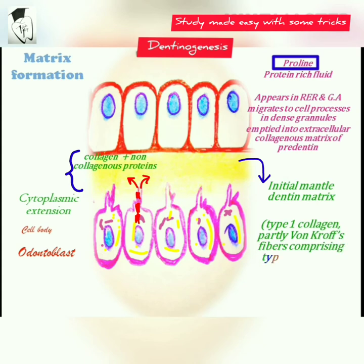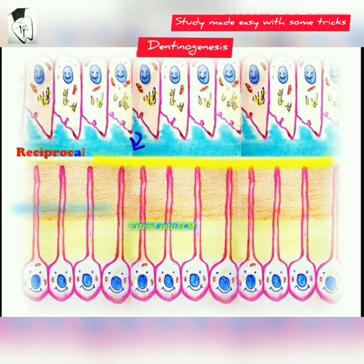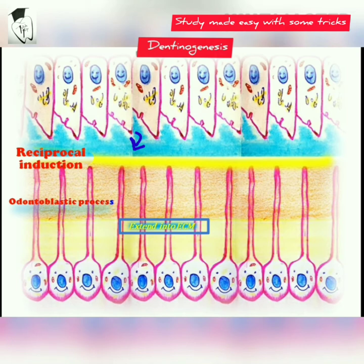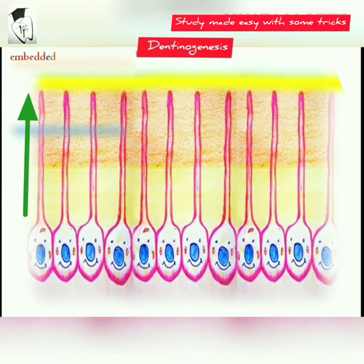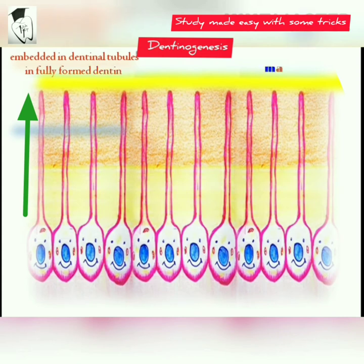As soon as the first layer of dentine is formed, the ameloblast secretes the enamel matrix over the predentine as a result of reciprocal induction. As the cell recedes towards the pulp, it leaves behind a single extension; several processes join into one, which becomes enclosed in a tubule — called the odontoblastic process or Tomes' fiber. It keeps elongating as more organic matrix is deposited and the odontoblast moves towards the pulp, with odontoblastic processes finally embedded in dentinal tubules in fully formed dentine.